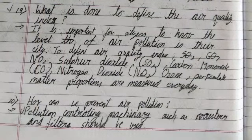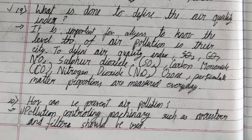What is done to define the air quality index? It is important for citizens to know the level of air pollution in their city. To define the air quality index, proportions of nitrogen, sulfur dioxide, carbon monoxide, nitrogen dioxide, ozone and particulate matter are measured every day.